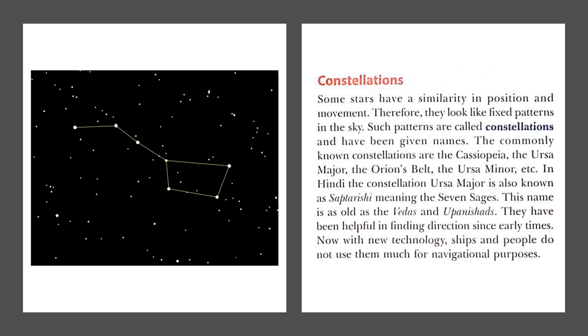Commonly known constellations are Cassiopeia, the Ursa Major, the Orion's Belt, the Ursa Minor, etc. These are some groups of constellations. They form a design, a similar pattern. In Hindi, the constellation Ursa Major is also known as Sapta Rishi, the meaning is seven sages. This name of Sapta Rishi is very old, taken from the Vedas and Upanishads.